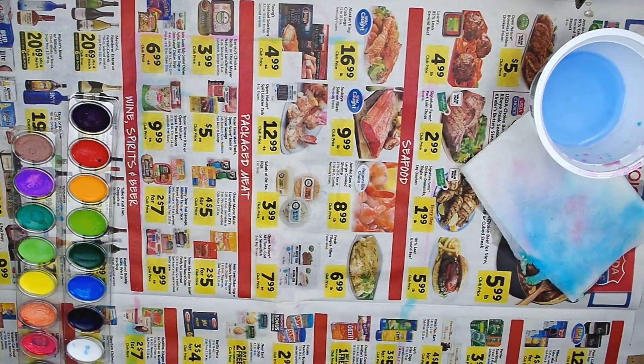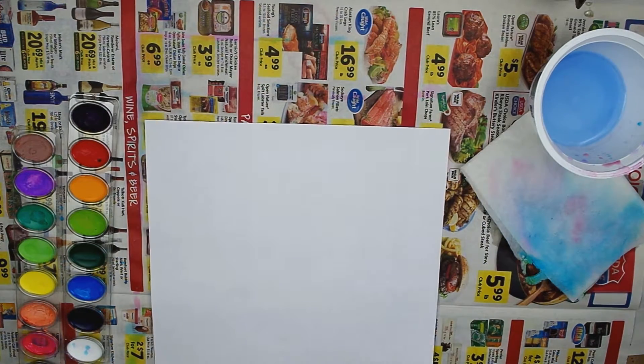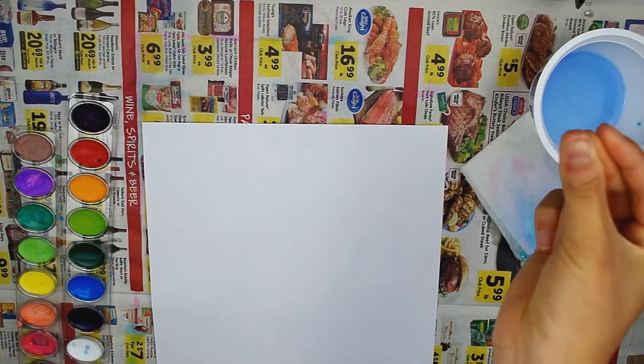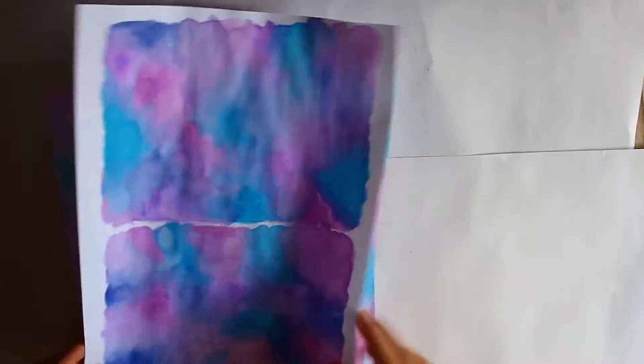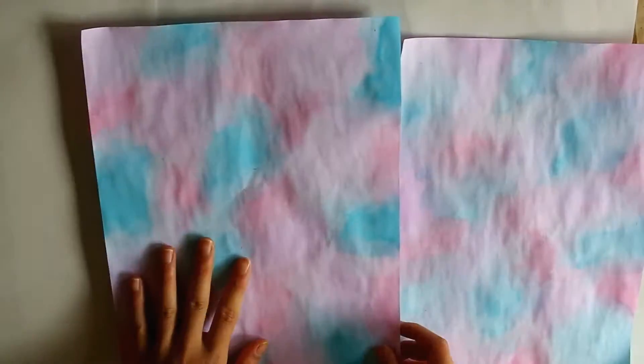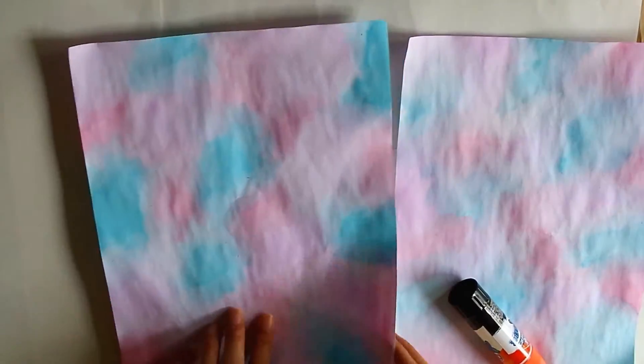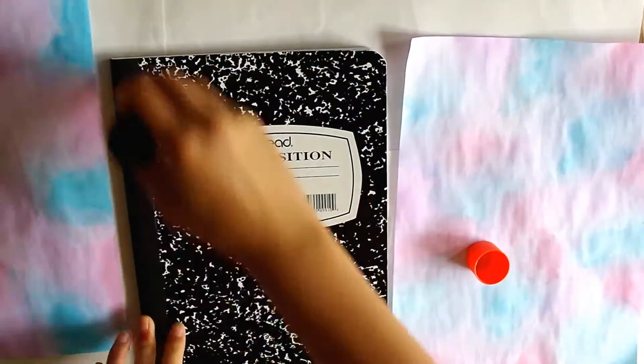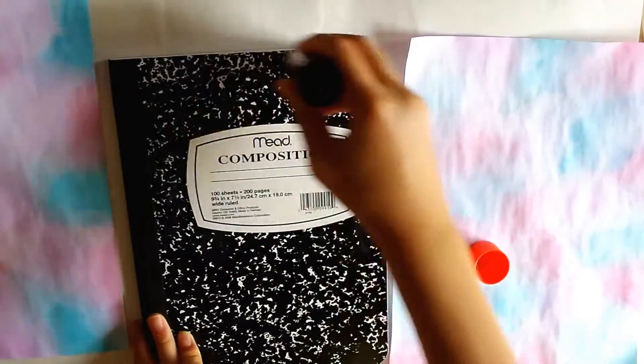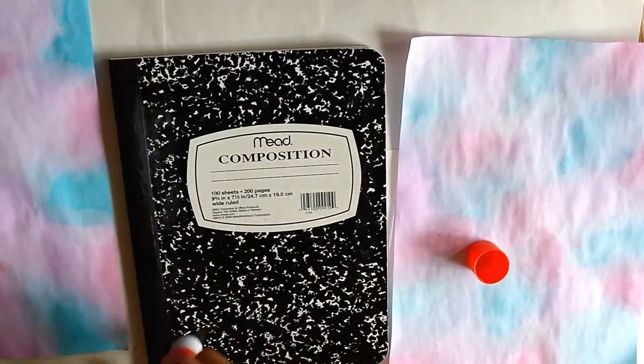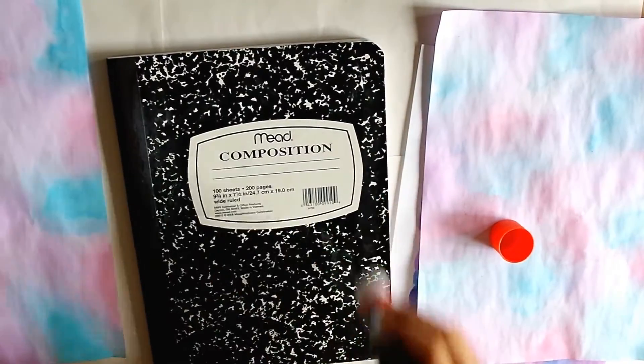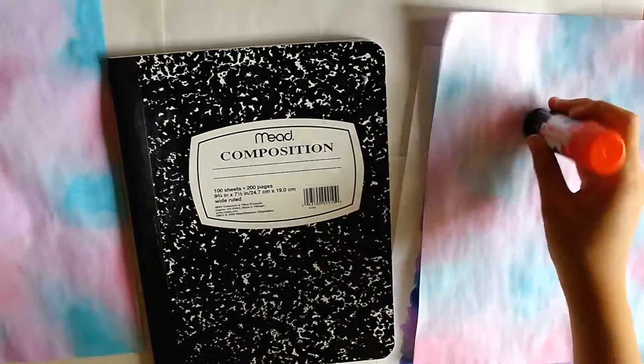When you are done painting one piece of paper, let it dry, then move on to the next. When all your pieces of watercolor have dried, it's time to glue them onto the notebooks. Use a glue stick and apply glue to the notebook, not the paper. You want to apply the glue to the notebook because the paper is going to be bigger than the notebook and you don't want any extra glue where you don't need it.